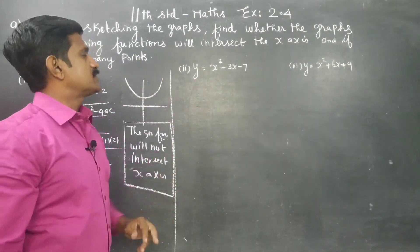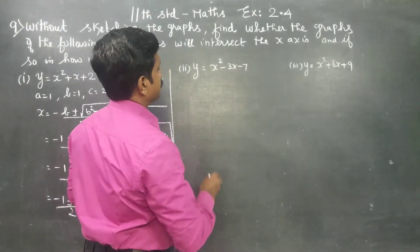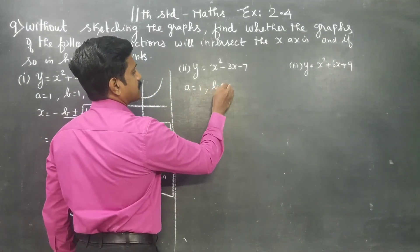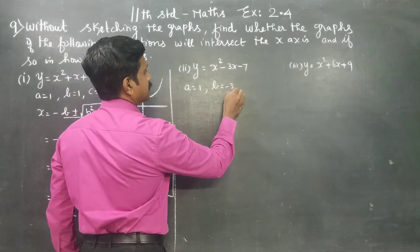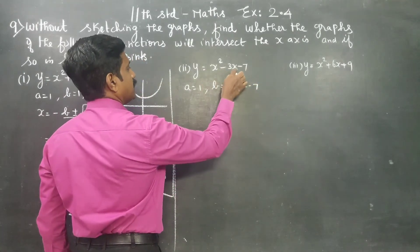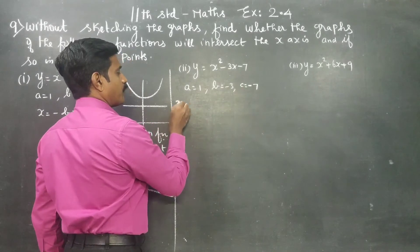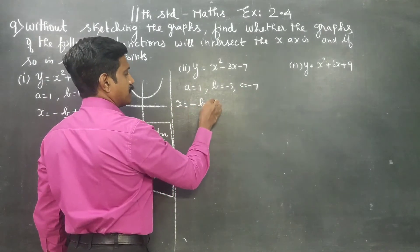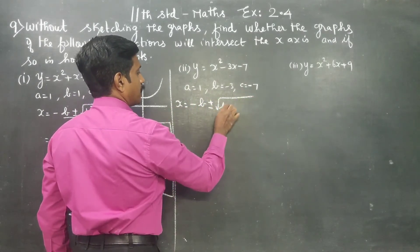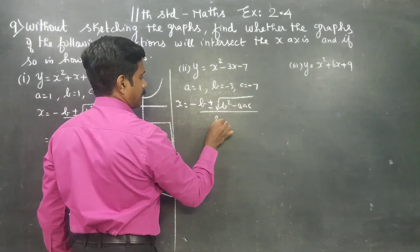Moving to the next sum: y is equal to x squared minus 3x minus 7. Here a is equal to 1, b is equal to minus 3, c is equal to minus 7. Using the formula method, x is equal to minus b plus or minus square root of b squared minus 4ac, divided by 2a.